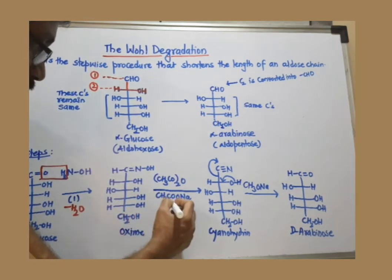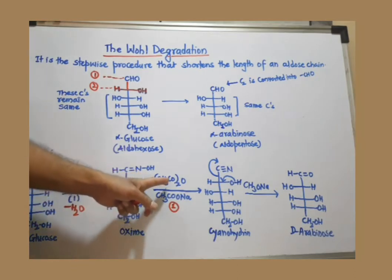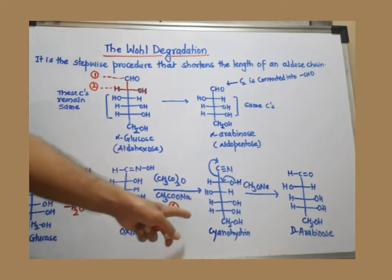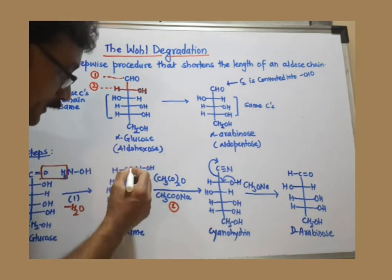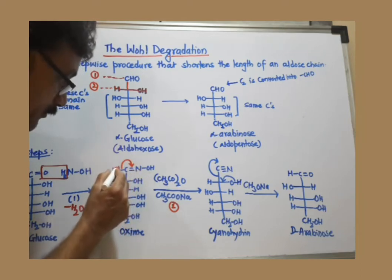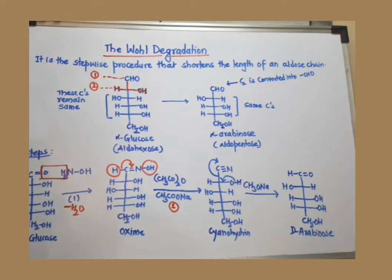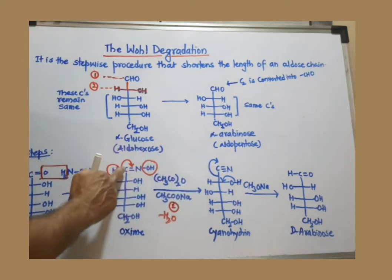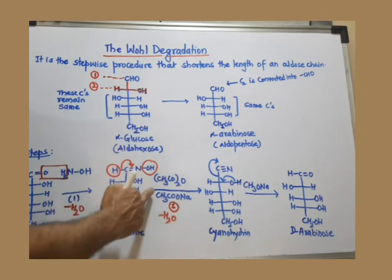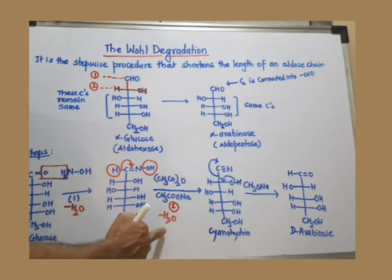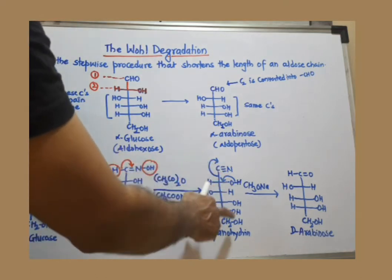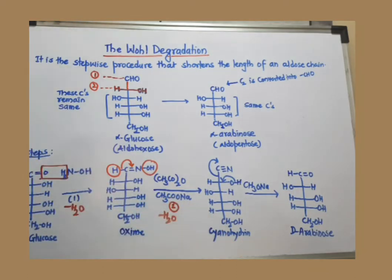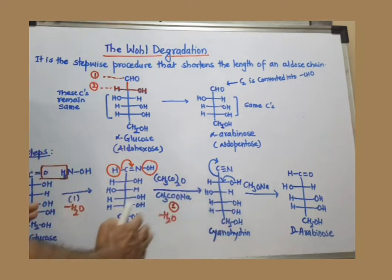Step number two: acetic anhydride and sodium acetate are used, and the reaction is dehydration — removal of a water molecule. A triple bond is formed between carbon and nitrogen, and this portion is removed along with water to get a nitrile. So the oxime is converted to a cyanohydrin after dehydration, with acetic anhydride in the presence of sodium acetate as the dehydrating agent. Up to this step, there is no loss of carbon.